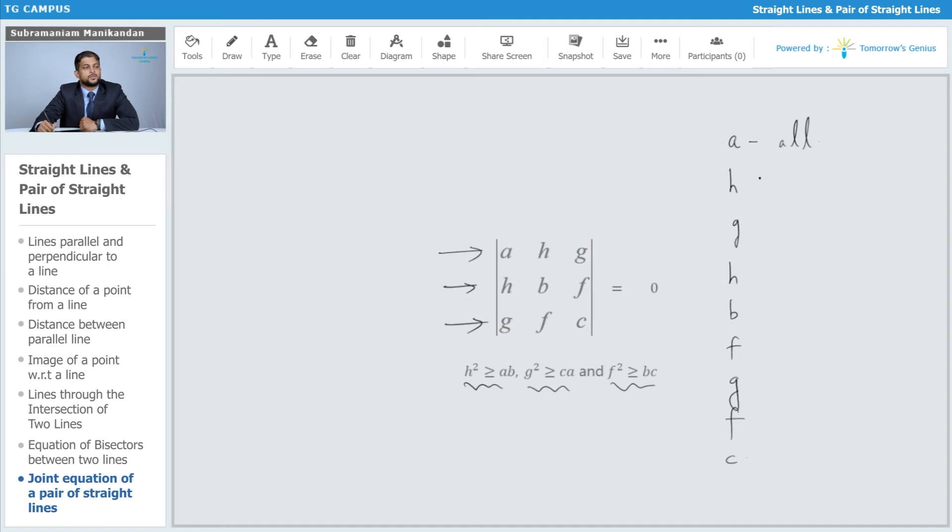You can use this memory aid to remember which coefficient comes in which row of the determinant. 'All' represents the first alphabet, the letter 'a', which represents the coefficient a, the coefficient of x².